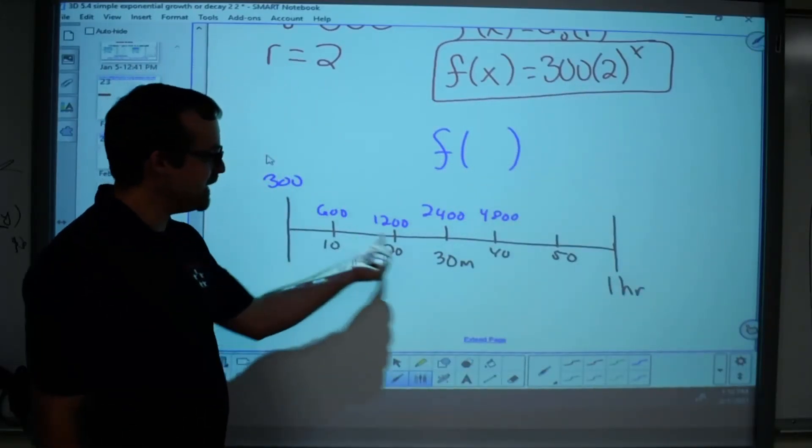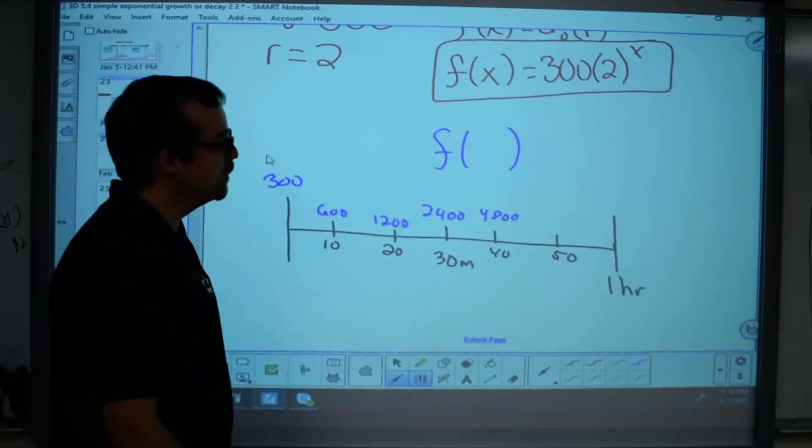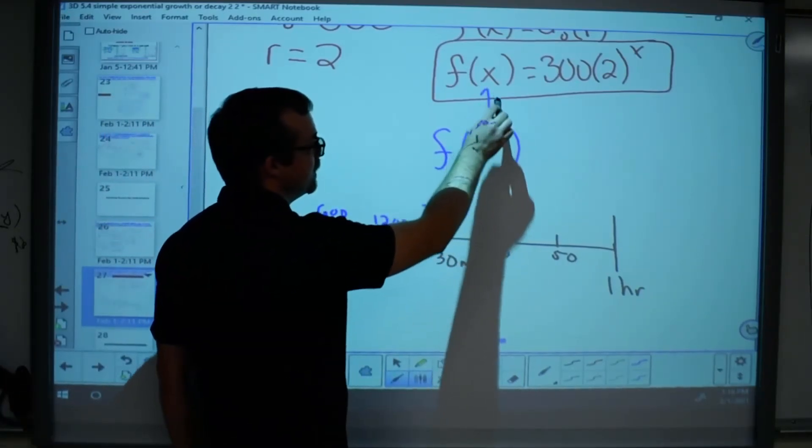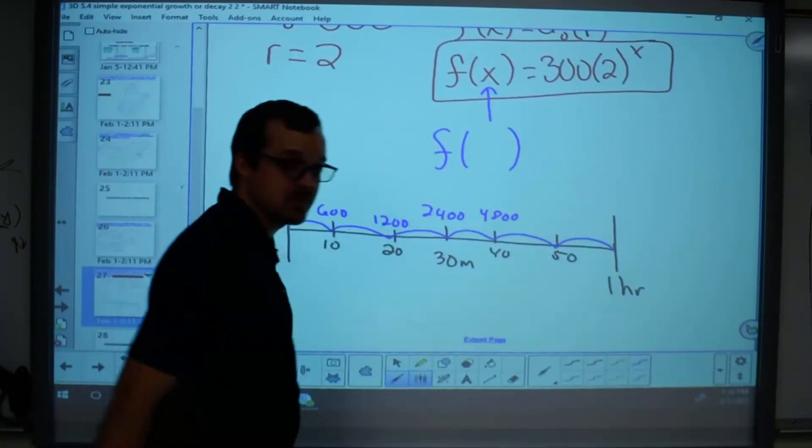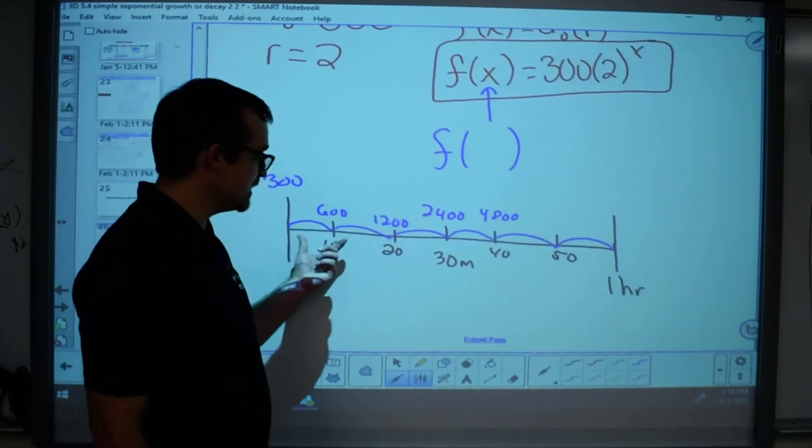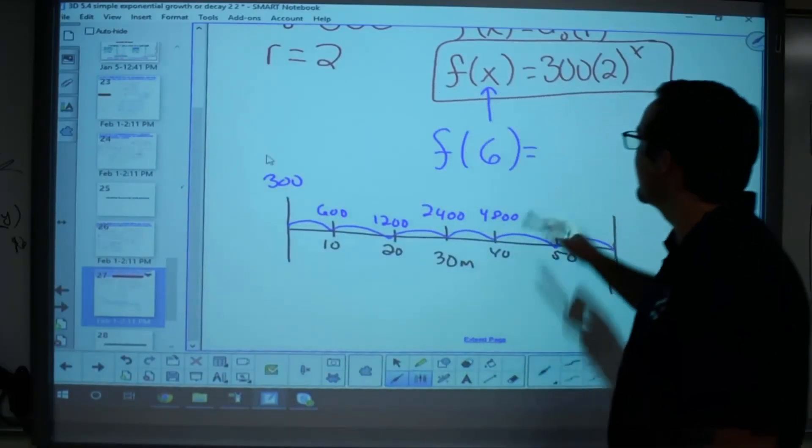The question is, how many intervals are passing? How many times is the bacteria doubling? We're just trying to figure out what x is right here. How many times does it double? Well, it doubles one, two, three, four, five, six times, right? Because there are six 10-minute intervals in an hour. This is going to double six times. And that's what we need to plug in for x.